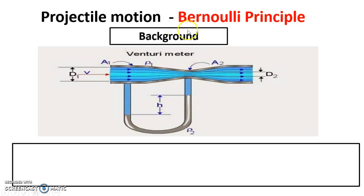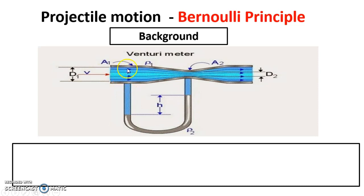Bernoulli was a physicist, and basically he did an experiment looking at airflow and pressures. What he did — if you imagine he had a big fan which blew airflow into a venturi meter. The airflow went through the first part of the venturi meter. Because there was more space, the velocity of the air was slower — it had a lower velocity of airflow. Then, when it went down to the narrow tunnel area, it got squeezed through.